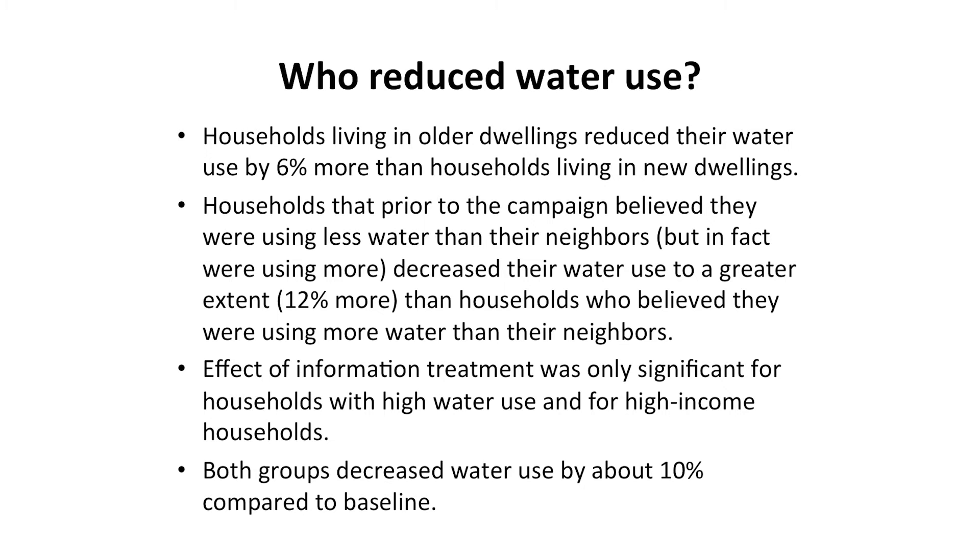The researchers found that the effect of information treatments was only significant for households with high water use and for high-income households. Both groups decreased water use by about 10 percent compared to baseline. This last finding strikes me as particularly good news. One might be worried that the social norms information would pressure households with low water use to reduce their water use even further, possibly below the socially optimal level — but this does not seem to be the case. In conclusion, the size of the direct effect of the information treatment found in this experiment in Colombia are very similar to the results from a growing number of such studies in the United States.